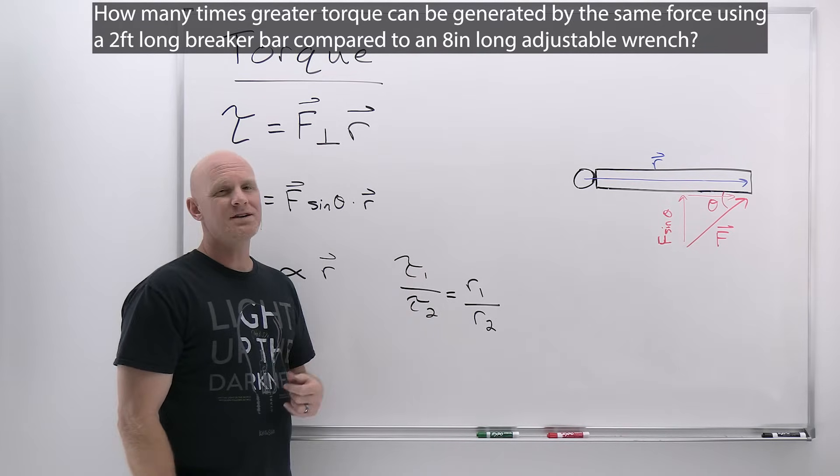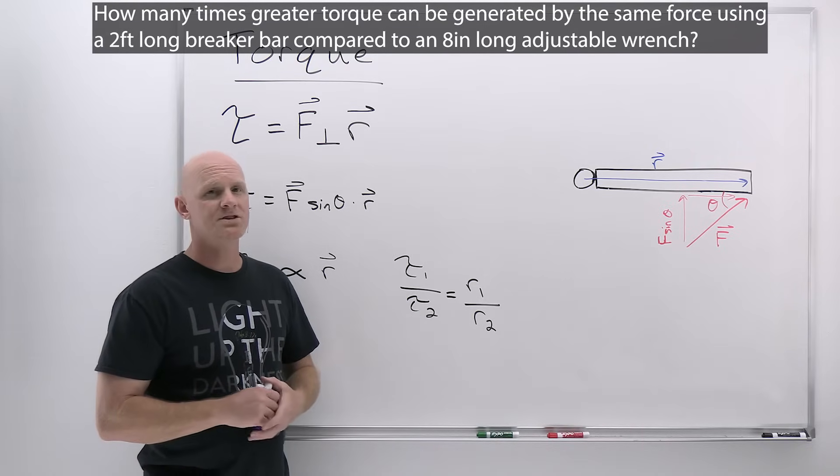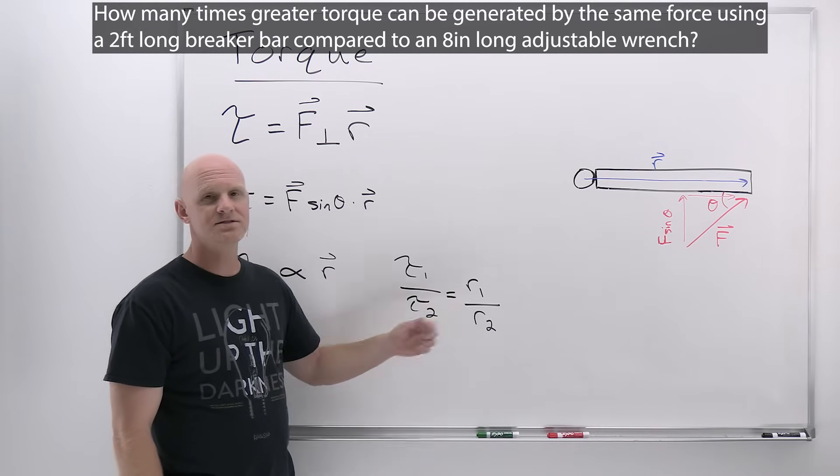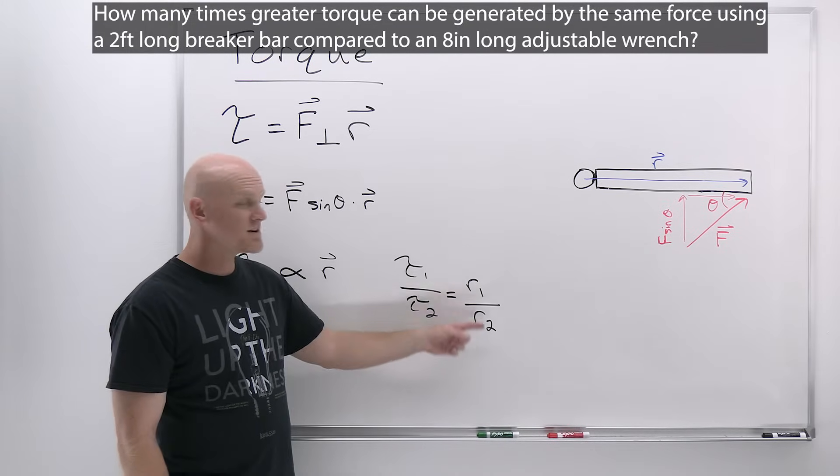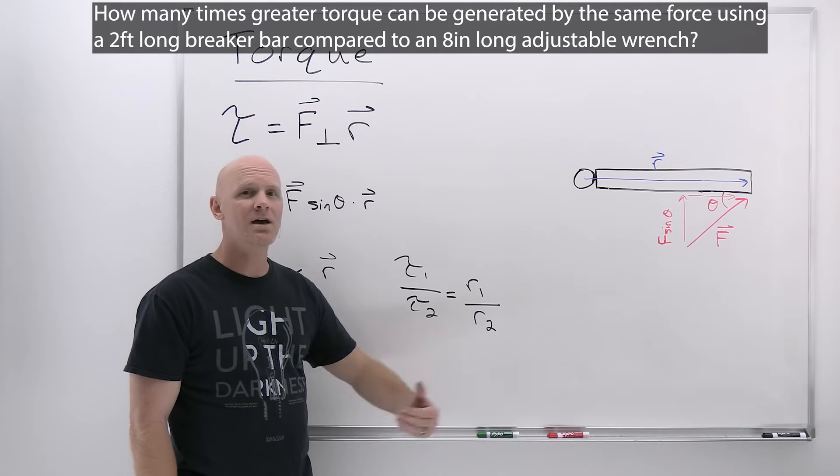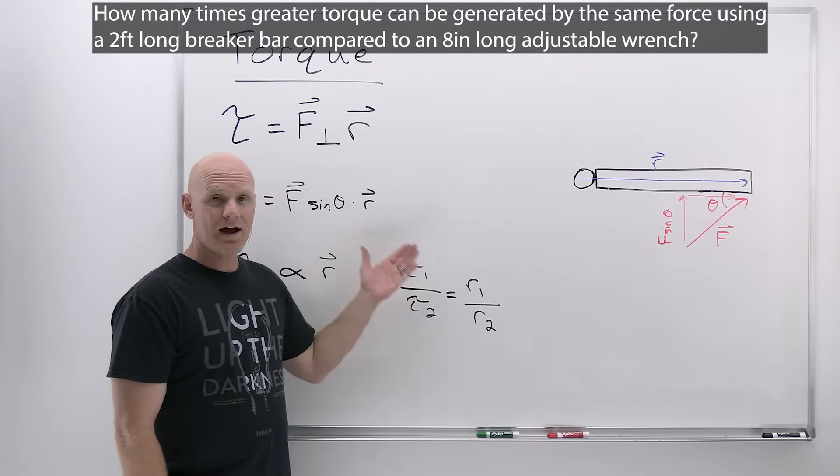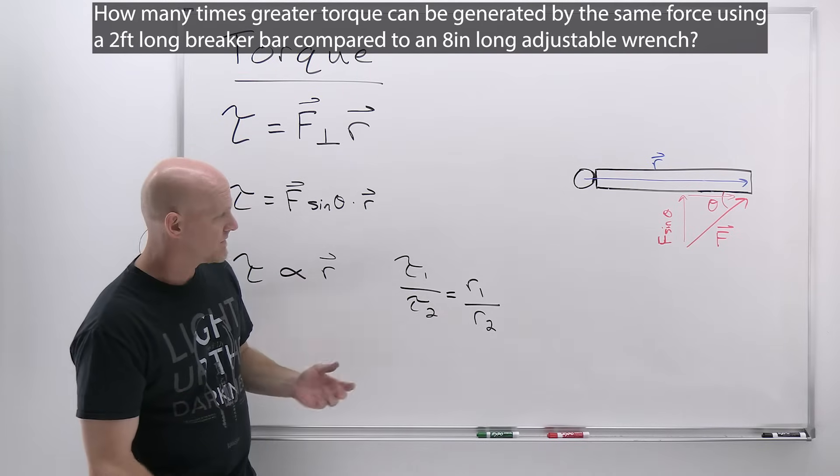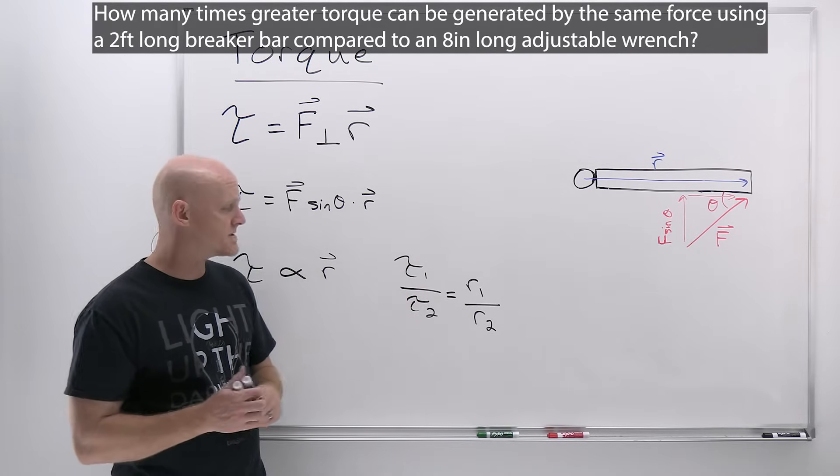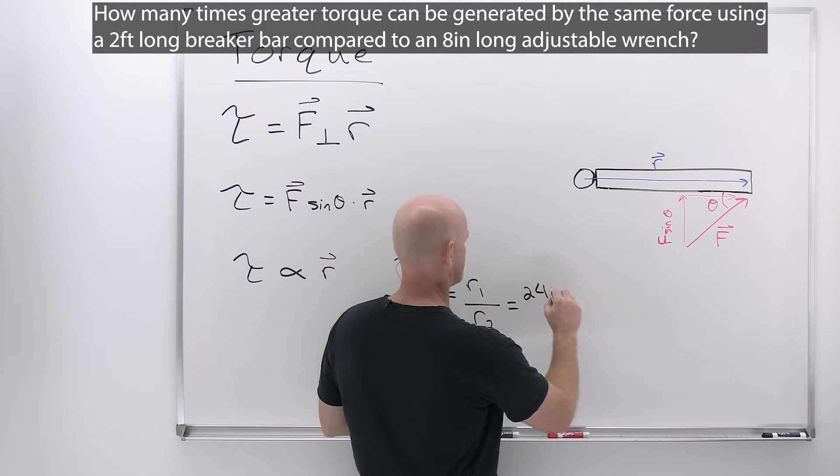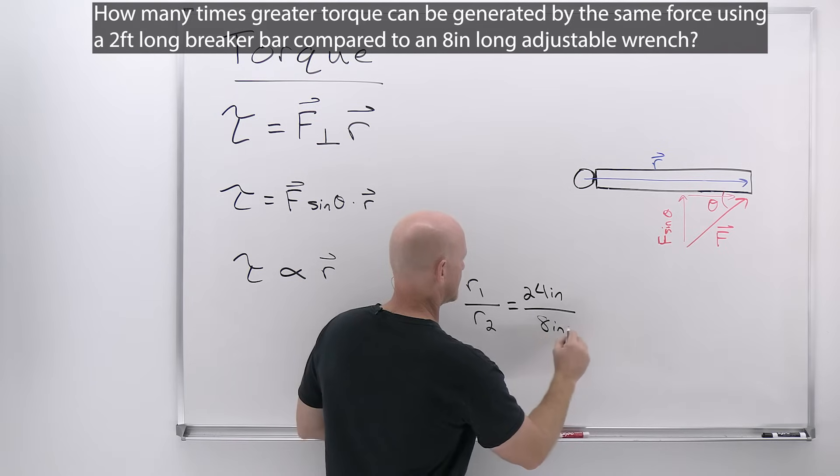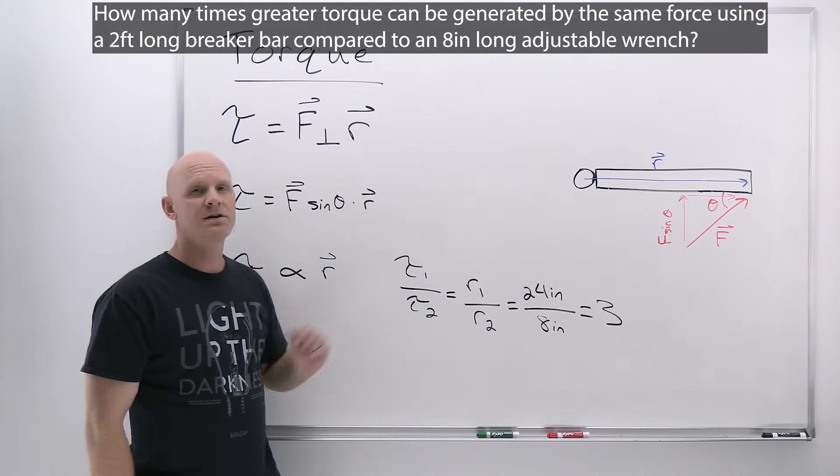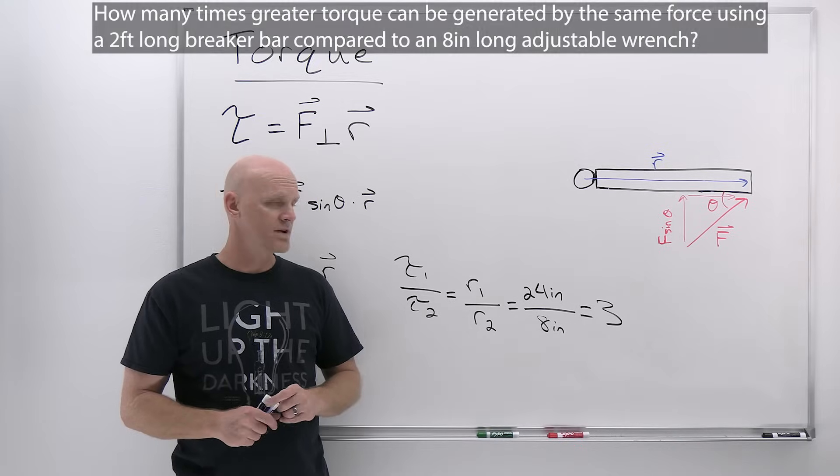You might be like, Chad, these are given in inches and feet, we should convert to SI units. For most physics problems, you really should convert to SI units, although this is one where you can get away with it. The units are going to cancel. The ratio is going to be exactly the same no matter what units. I'm going to use inches. A two-foot breaker bar, two feet, 12 inches in a foot, that's 24 inches. Compared to my eight-inch adjustable wrench, we can see that with a three times greater lever arm distance, we're going to get three times greater torque.